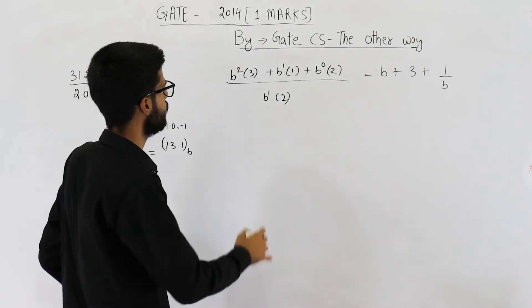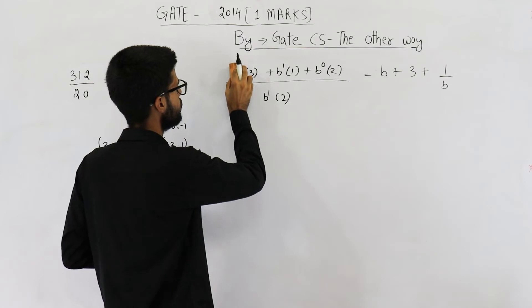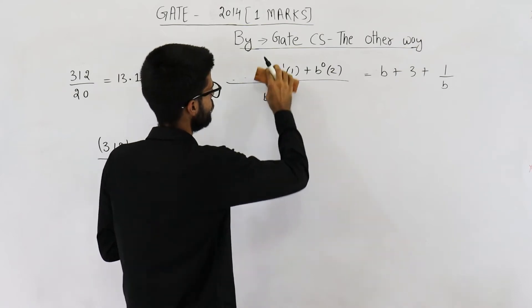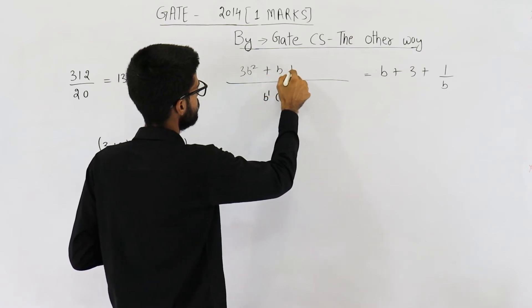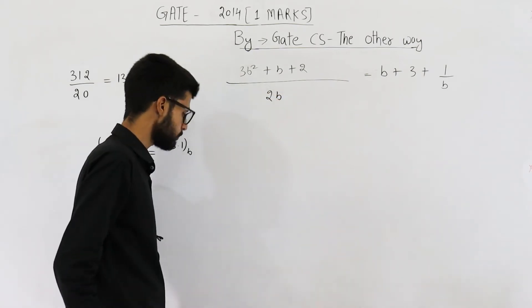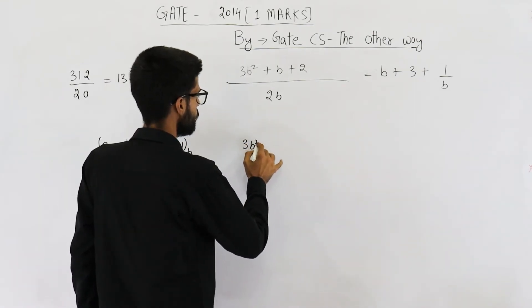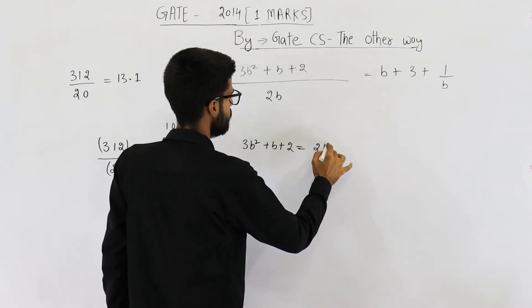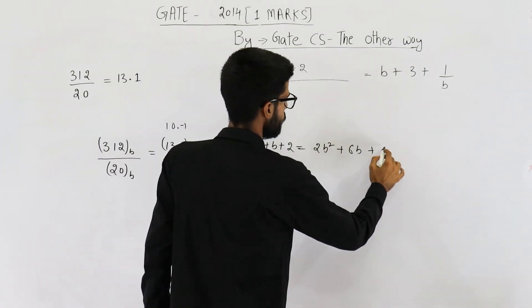Now if you just solve it, you are going to get 3 b square plus b plus 2 and this is 2 b. Now just multiply this 2 b with this right-hand side. You are going to get 3 b square plus b plus 2 is equal to 2 b square plus 6 b and this will result in 2.